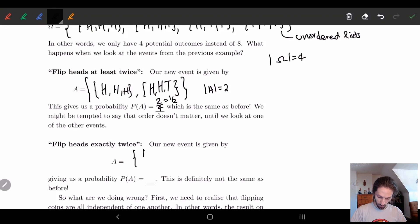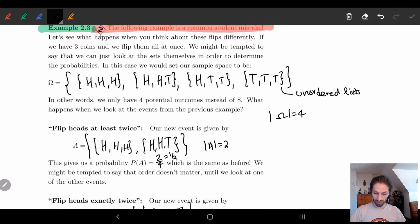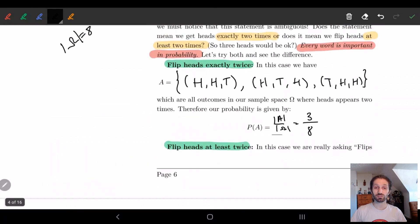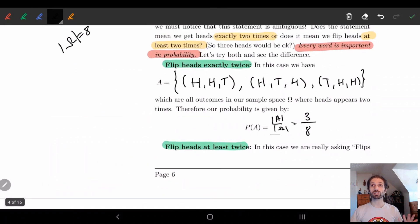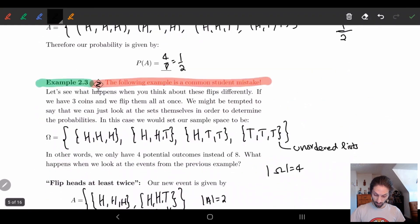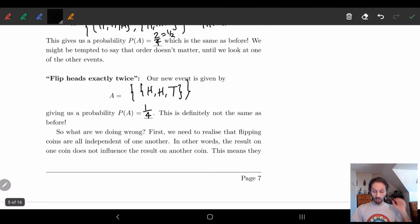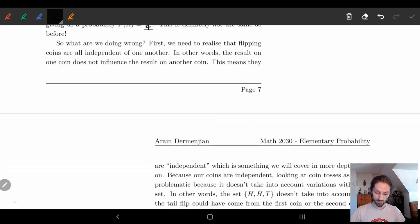Flip heads exactly twice. Well, flip heads exactly twice, this is also easy. HHT. We only have one element. So here, we would say one fourth. Well, one fourth is definitely not the same as three eighths. So which is correct? Is it three eighths, or is it one fourth? And so the problem is, it's actually the three eighths. And the one fourth is just wrong.